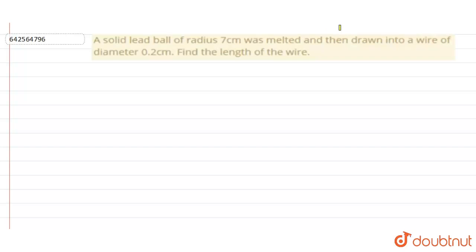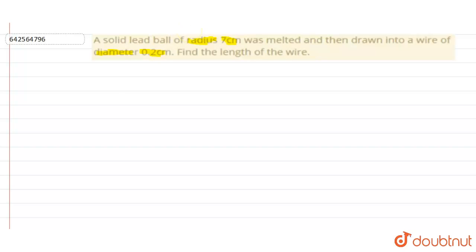Hello everyone, let's look at today's question. A solid lead ball of radius 7 centimeters was melted and then drawn into a wire of diameter 0.2 centimeters. We have to find the length of the wire.